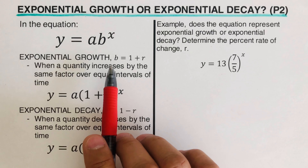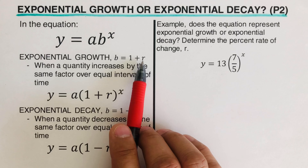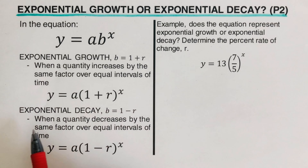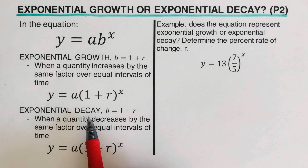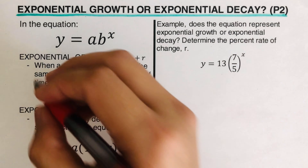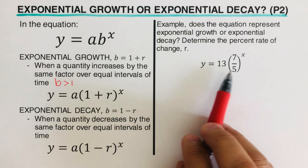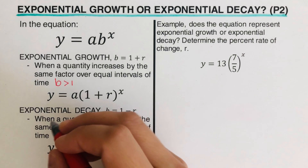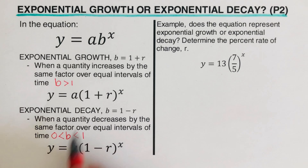There are two cases: exponential growth or exponential decay. For exponential growth, b = 1 + r, where r represents the growth rate. For exponential decay, b = 1 − r, where r represents the decay rate. Here's a trick: if b is greater than 1, the equation is exponential growth. If b is greater than 0 but less than 1, the equation is exponential decay.